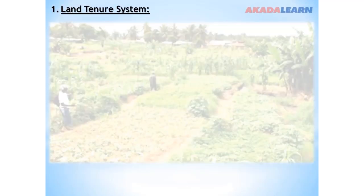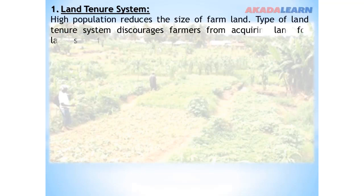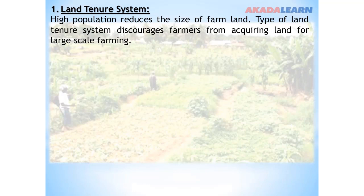Problem number one: Land tenure system. High population reduces the size of farmland. The land tenure system discourages farmers from acquiring land for large-scale farming. Sometimes the land is fragmented.